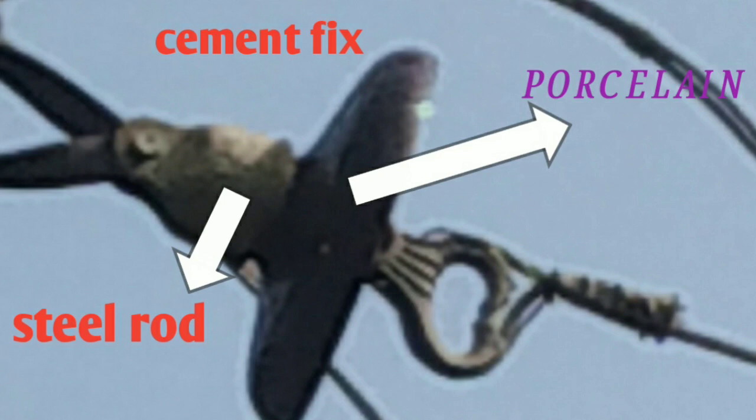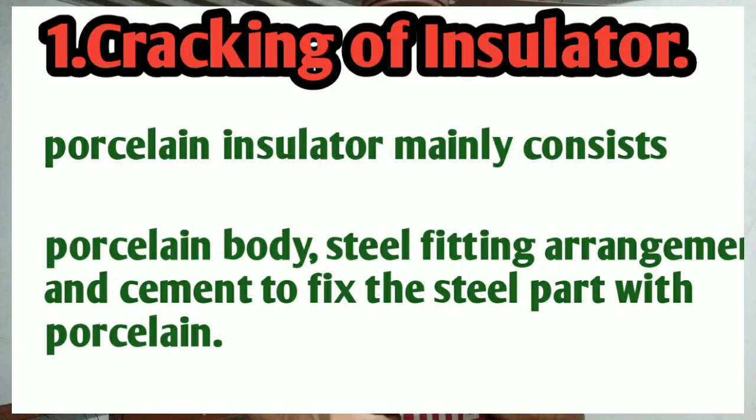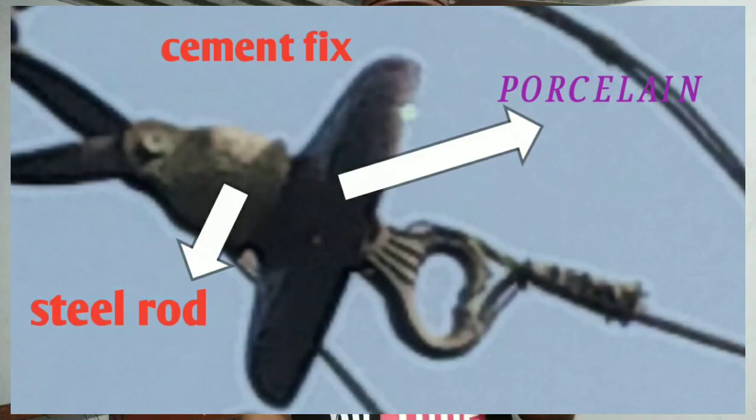Let me show you a disc type insulator. The insulator has a portion of porcelain or glass material. We use a disc type insulator and fix the current insulator with a steel rod arrangement. These materials are fixed together with a metal suture — porcelain and steel.